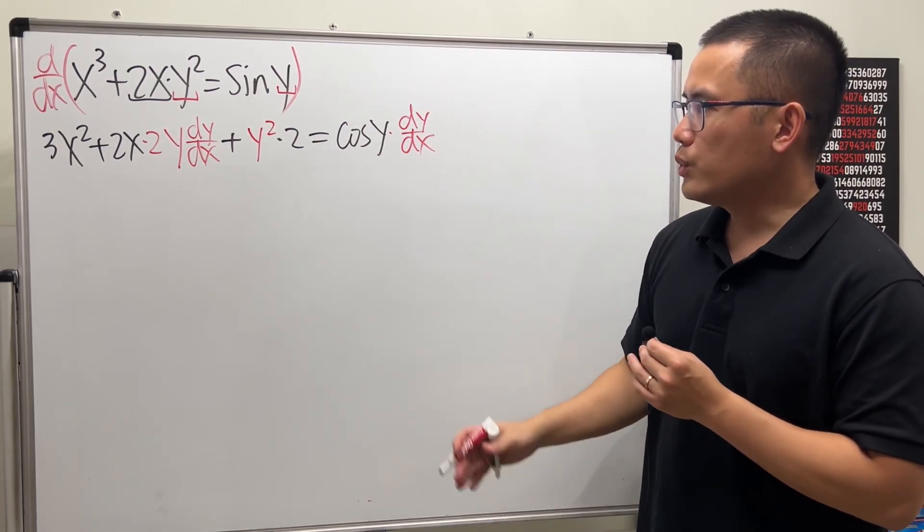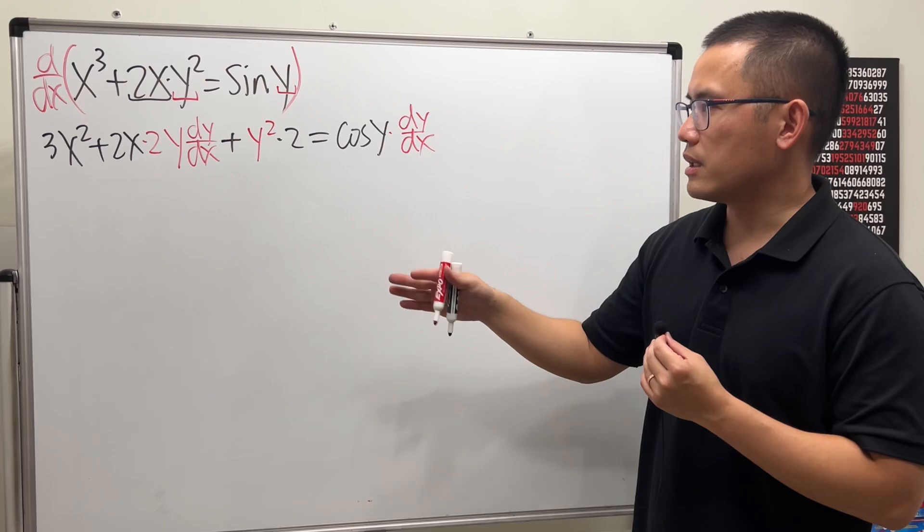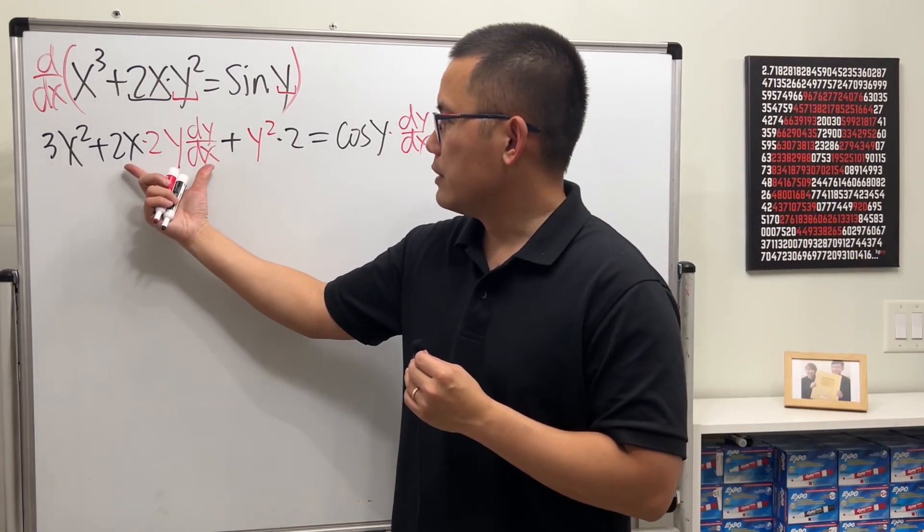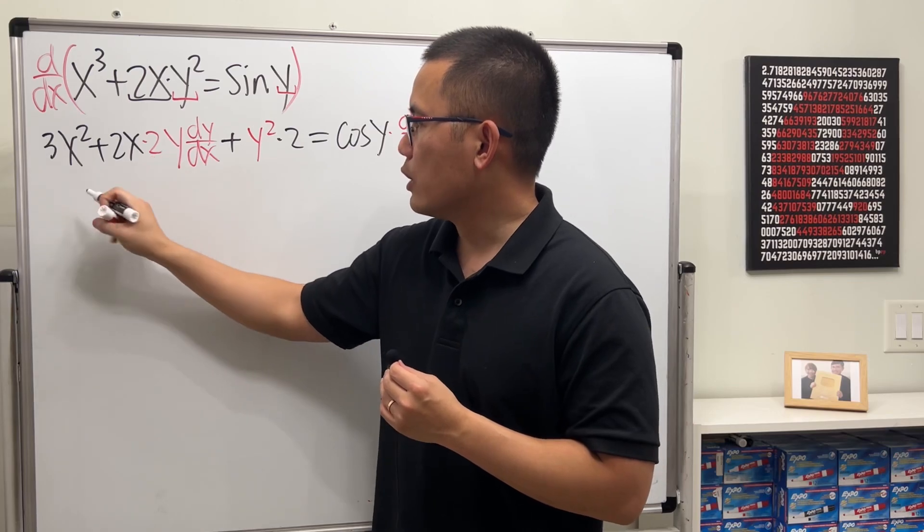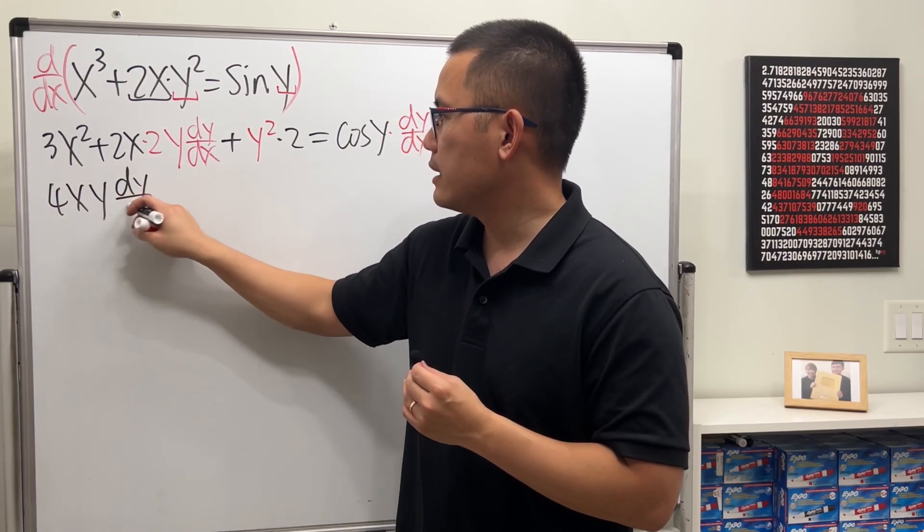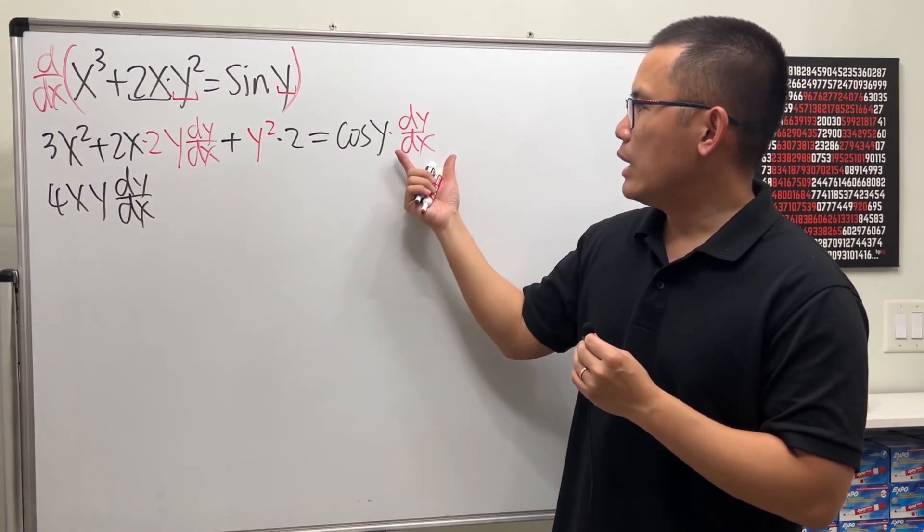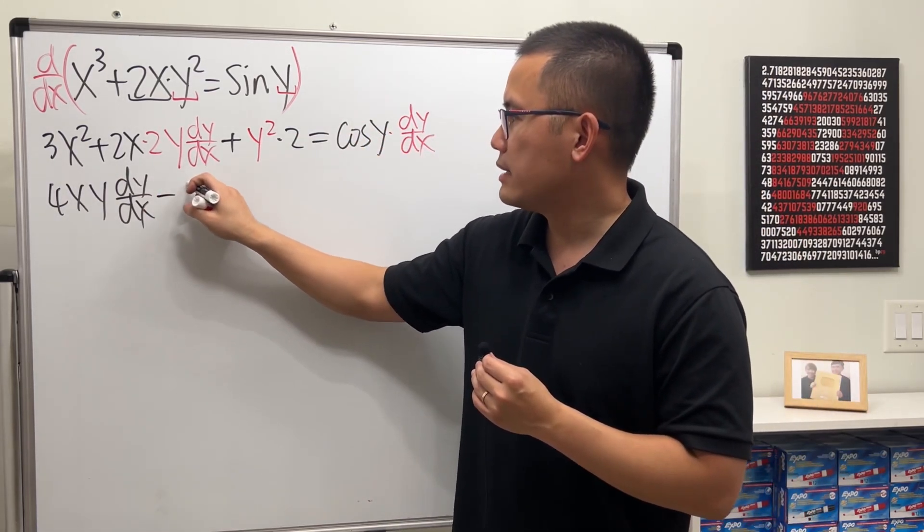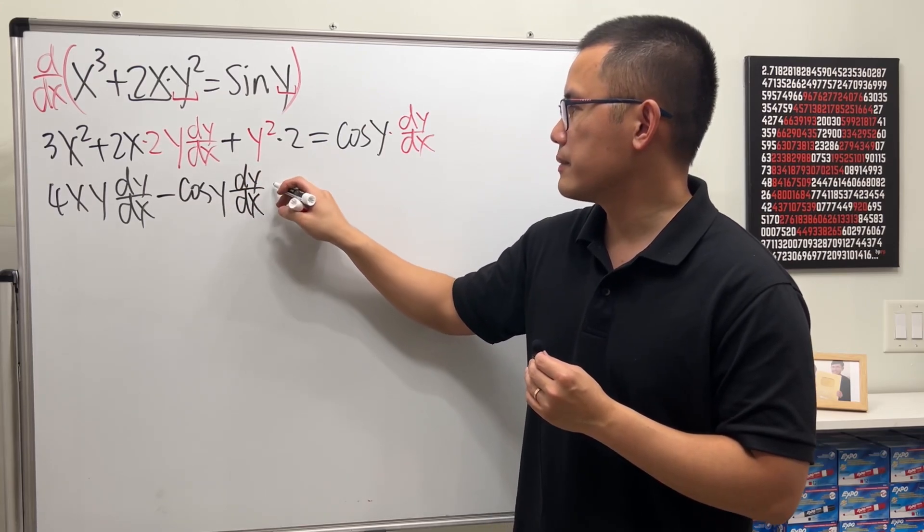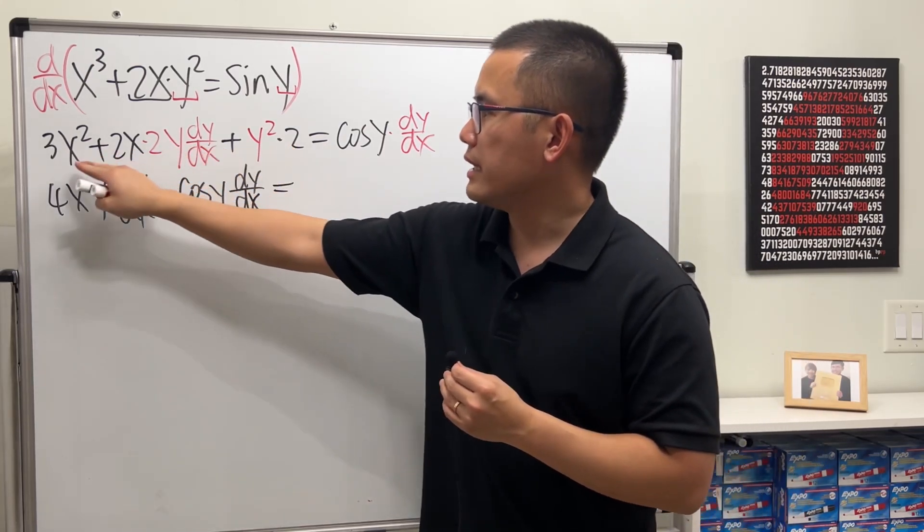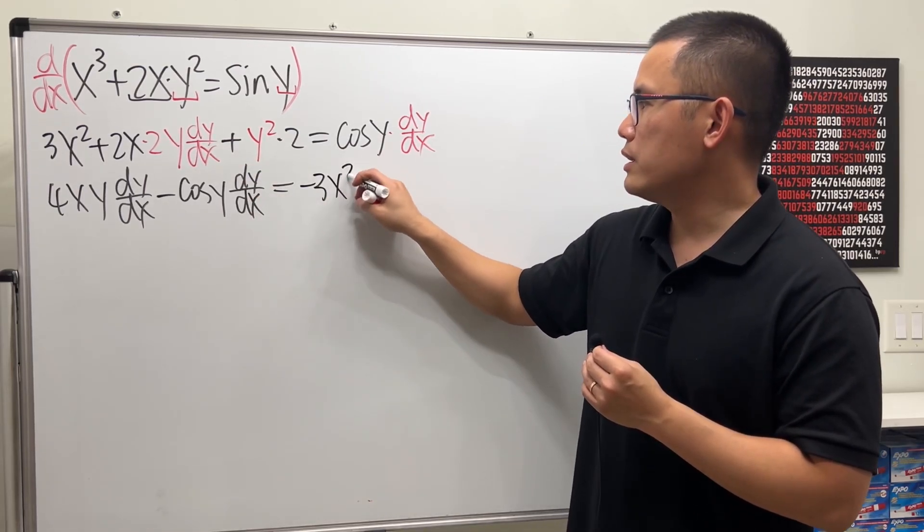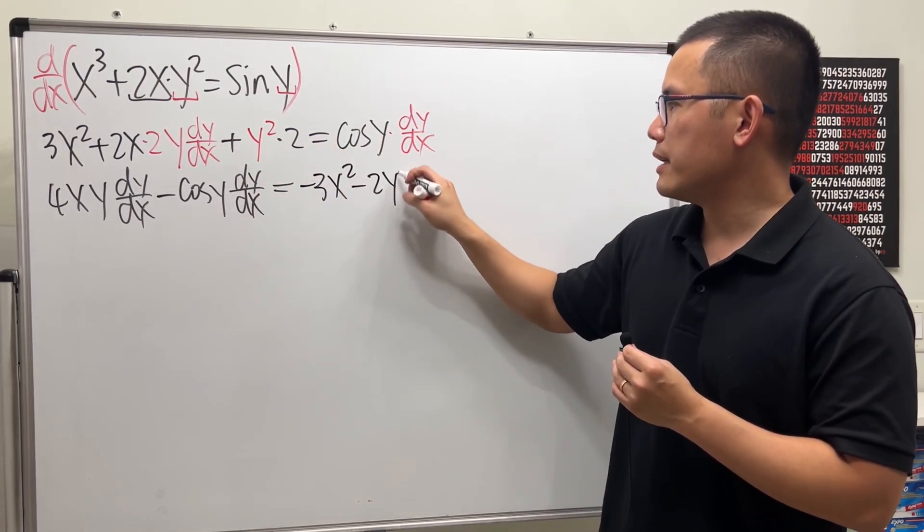And now we will just have to collect the dy/dx together and do all that. So have a look. This right here, multiply out, we get 4xy dy/dx. I will move this to the other side. So minus cosine y dy/dx. And then I'll put this and that to the other side. So we have negative 3x squared minus 2y squared.